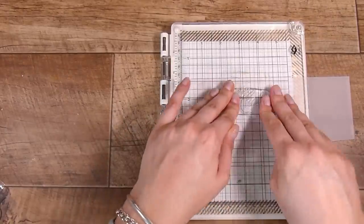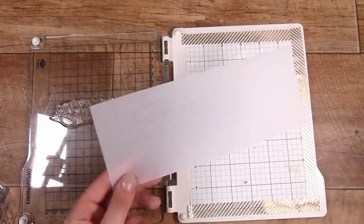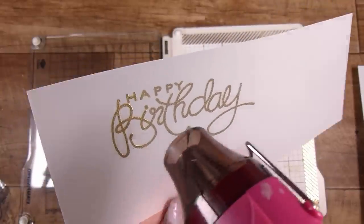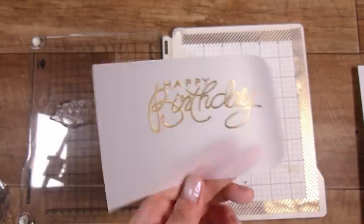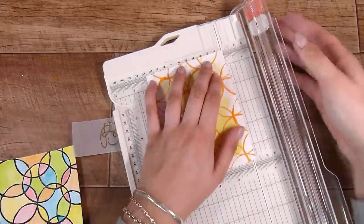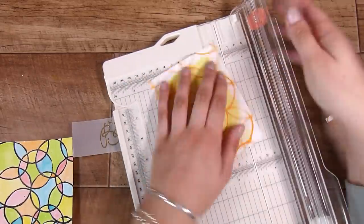Now to turn these into cards, I have taken some Lawn Fawn vellum. I have taken the big birthday words from the Woodware Craft Collection stamps and I am going to pop some gold embossing powder on these and heat set this. Now this is one of the things I love about this Lawn Fawn vellum - you can heat set, you can heat emboss on this.